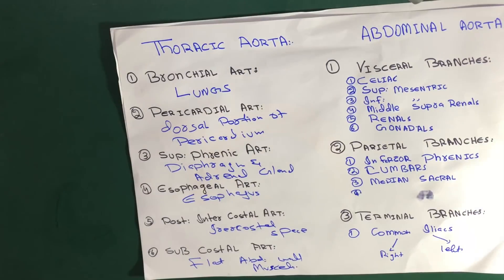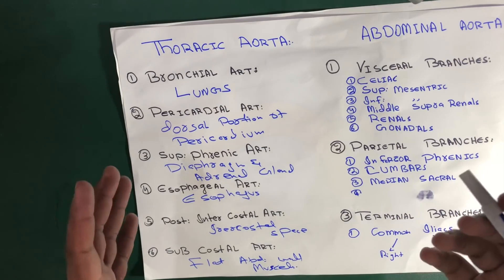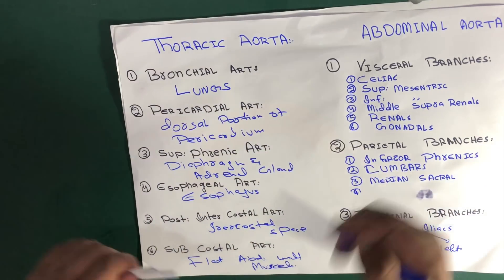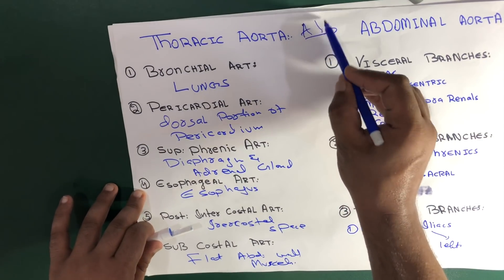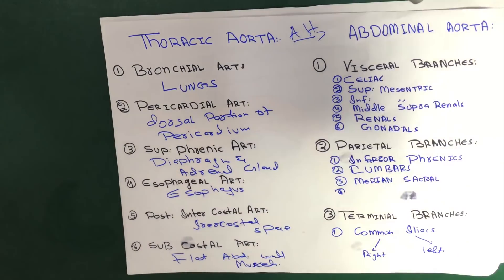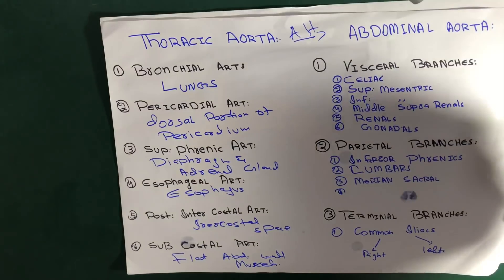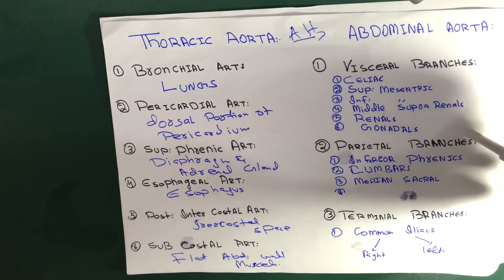Now let's talk about the abdominal aorta. After the thoracic aorta crosses the diaphragm through the aortic hiatus, it changes its name to the abdominal aorta. The abdominal aorta gives three main types of branches: visceral branches, parietal branches, and terminal branches.